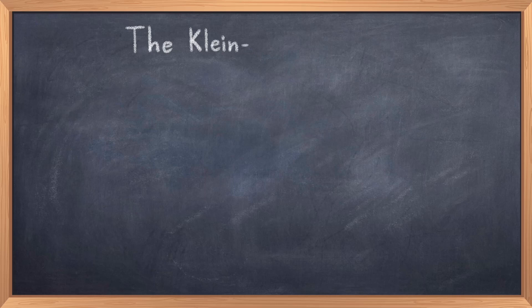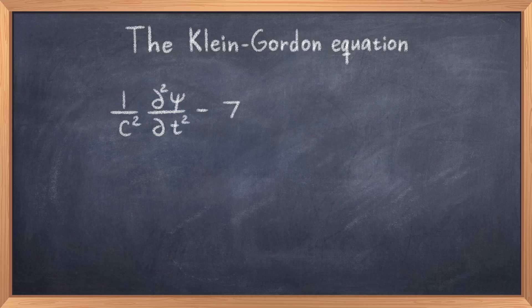As it turns out, we have actually already discussed an equation in the introduction to quantum field theory that is relativistic. That is the Klein-Gordon equation, which was discovered around the same time as the Schrödinger equation, and it was initially proposed that it could describe electrons in 1926. This is however not the case.